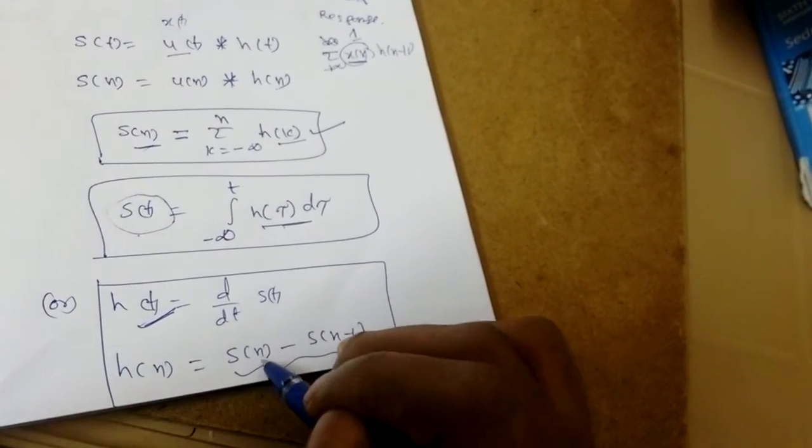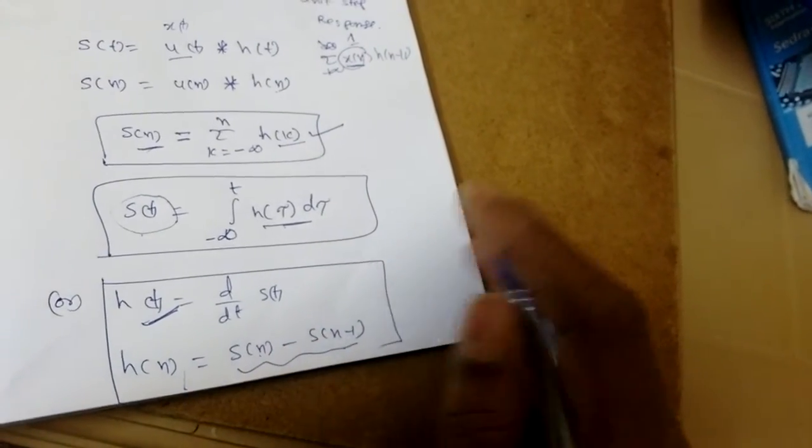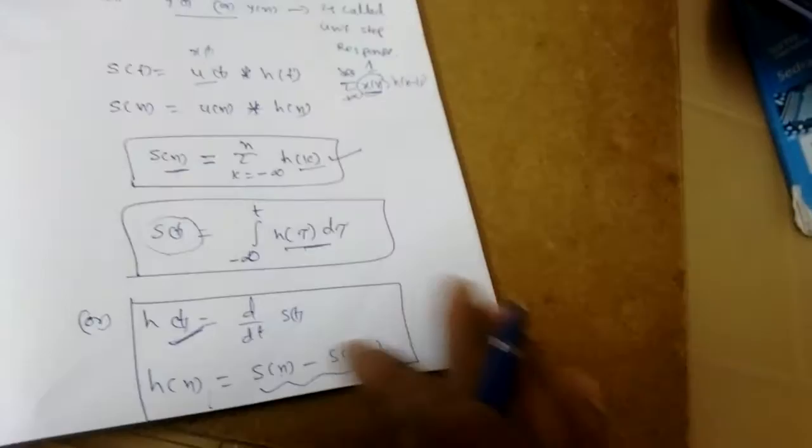If it is discrete time, the difference between s(n) and s(n - 1) will give impulse response for discrete time signals. Remember these properties.